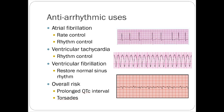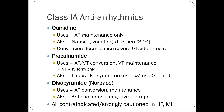Antiarrhythmic drugs are used for atrial fibrillation, ventricular tachycardia, and ventricular fibrillation. Your overall risk includes prolonging the QTc interval substantially, which can end up interfering with other processes or causing an arrhythmia itself. If you give too much antiarrhythmic, you can actually cause an arrhythmia — which is kind of interesting. We're going to talk about AFib quite a bit today during this segment.